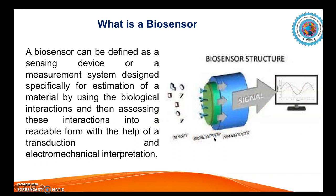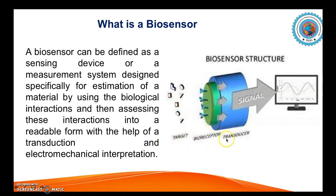The transducer converts that particular signal into an electrical signal that is eventually read by a digital reader, for example an LED screen, a flow reader, or a fluorometer. So basically, a biosensor is made up of a bioreceptor, a transducer, and a digital reader. These are the main components of a biosensor.